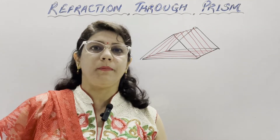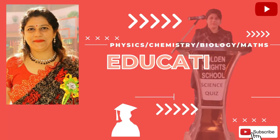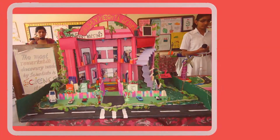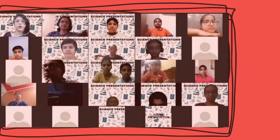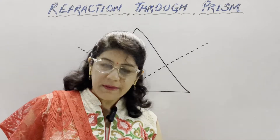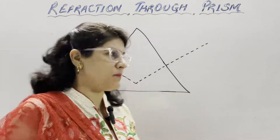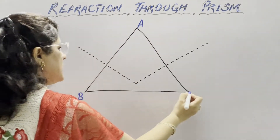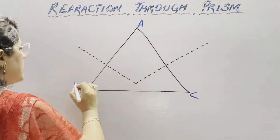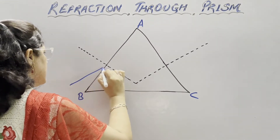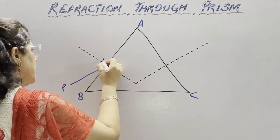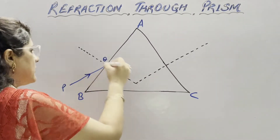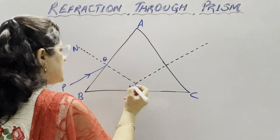Today we are going to talk about refraction of light through a prism. For simplicity, we are taking the principal section of the prism, that is the front triangular side — principal section A, B, C. Now the incident ray: suppose TQ is the incident ray which is coming, and N, N' is the normal.